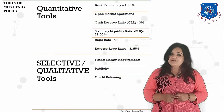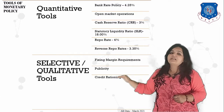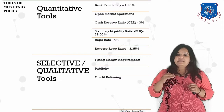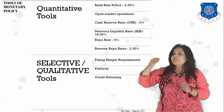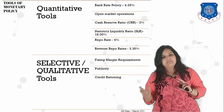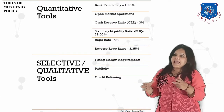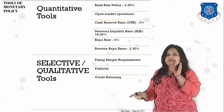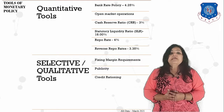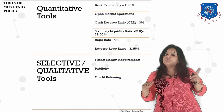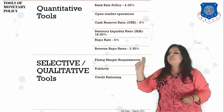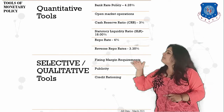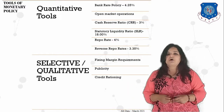The third qualitative tool is credit rationing. Here an upper limit for giving out loans to a particular sector is fixed. For example, if the government wants the agricultural industry to receive a higher amount of loans but electronics to receive less, it can mandate that 50% of a bank's loanable funds go to agriculture and a maximum of 20% to electronics. This ensures a particular industry does not get a disproportionately high level of investment from the bank.